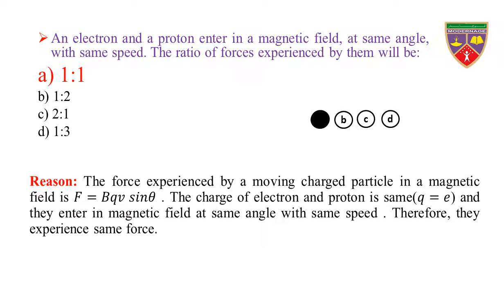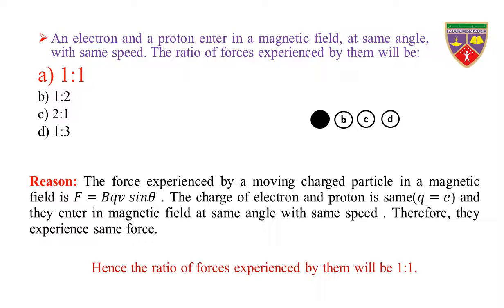Reason: The force experienced by a moving charged particle in a magnetic field is F = BQV sinθ. The charge of electron and proton is same, Q = e. And they enter the magnetic field at the same angle with the same speed. Therefore, they experience the same force, because F does not depend upon the mass of the particle. Hence, the ratio of forces experienced by them will be 1 to 1.